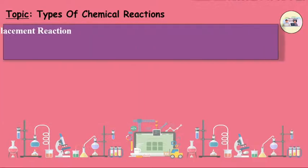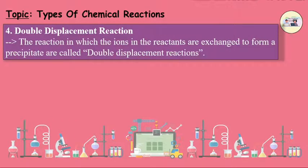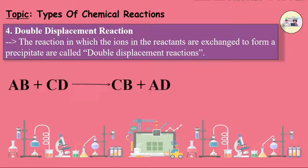Fourth, double displacement reaction. The reaction in which the ions in the reactants are exchanged to form a precipitate are called double displacement reactions. It can be simply remembered as AB plus CD produces CB plus AD.